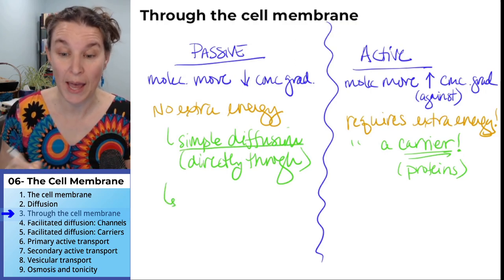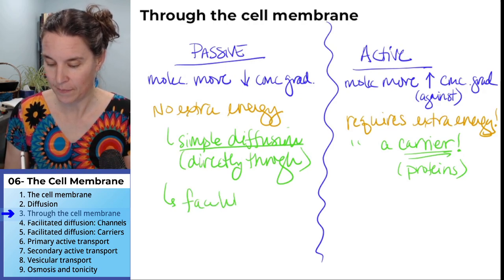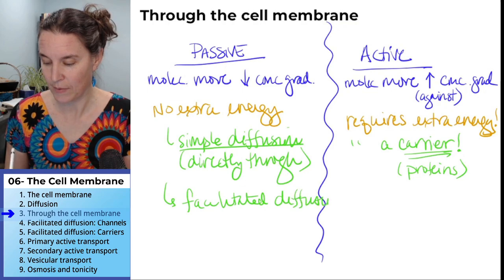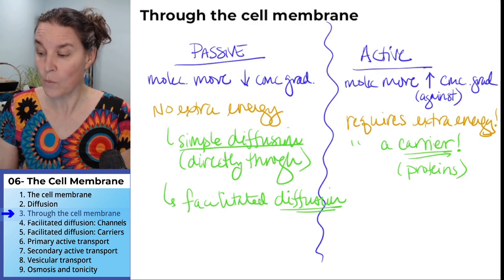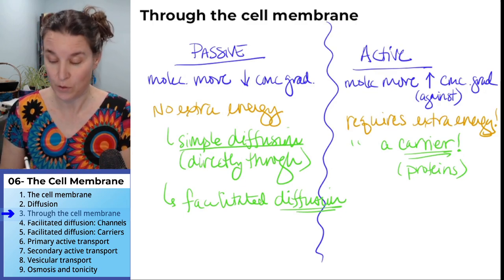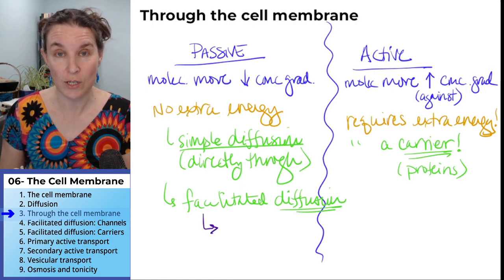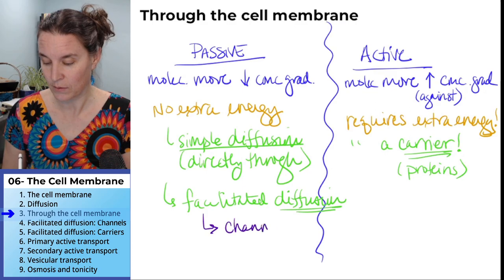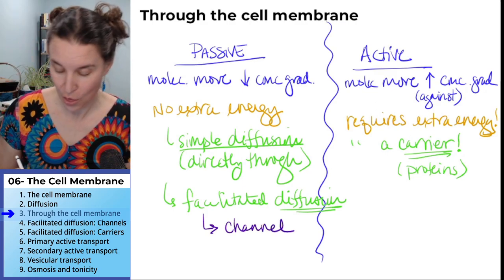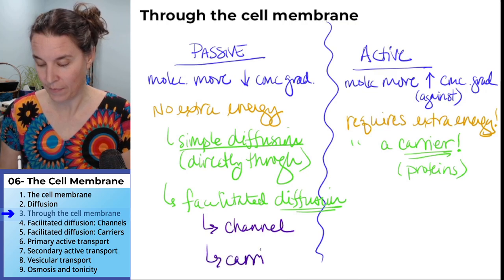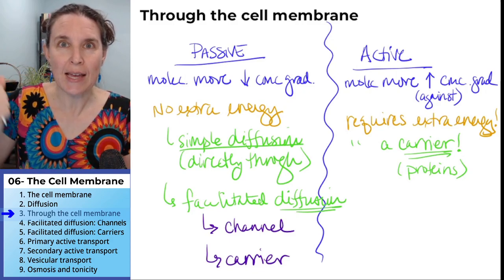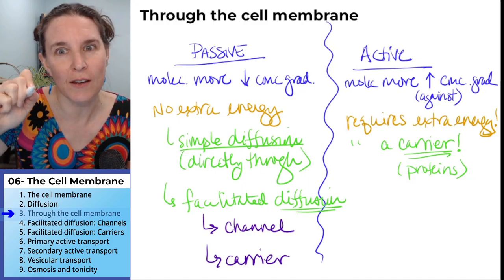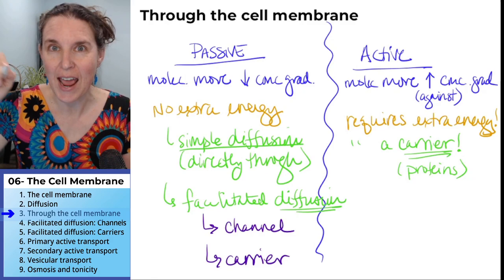We also have facilitated diffusion. The key word here is diffusion, but it's facilitated. We actually have two flavors of facilitated diffusion: you can have facilitated diffusion through a channel, which is like a tunnel, or through a carrier. We're going to talk about channels, carriers, and the difference between facilitated diffusion carriers and active transport carriers.